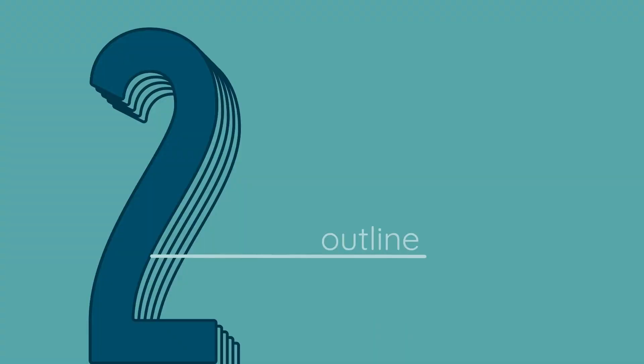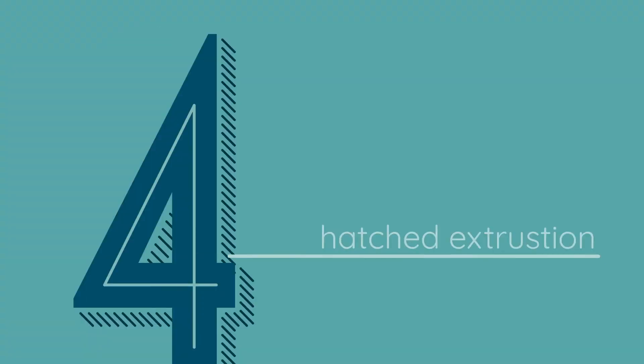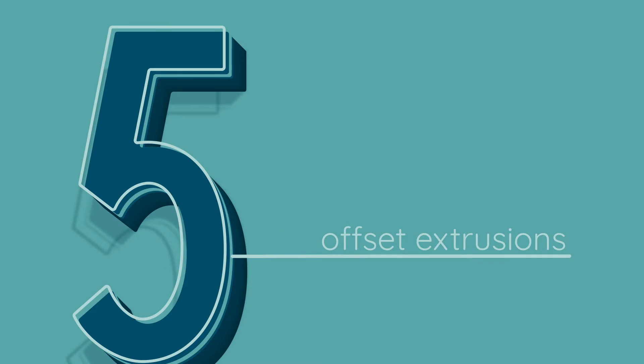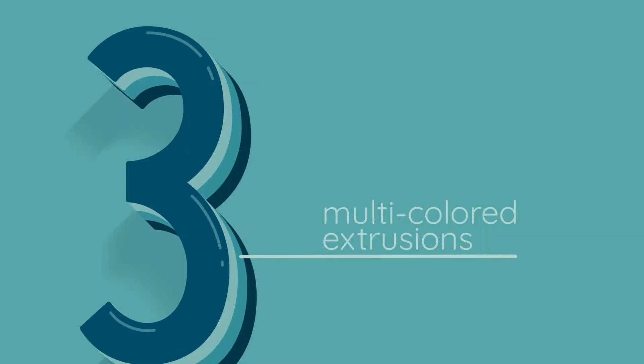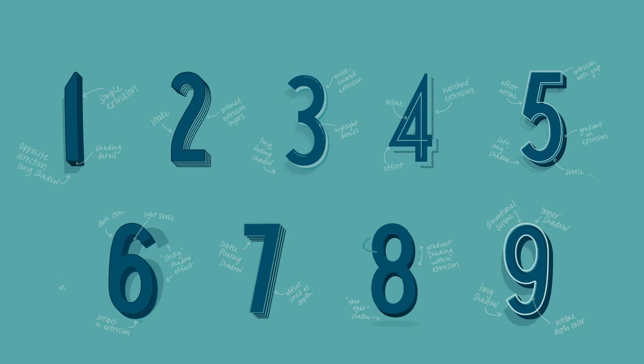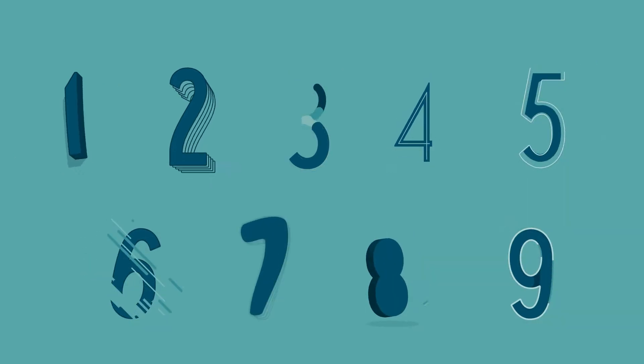Throughout the nine animated 3D lettering examples in this class, I'll show you how to add details like outlines, inlines, hatched extrusions, stripes, offset extrusions, multicolored extrusions, different kinds of shadows, and more. Plus, I'll show you how to animate each example in a unique way.